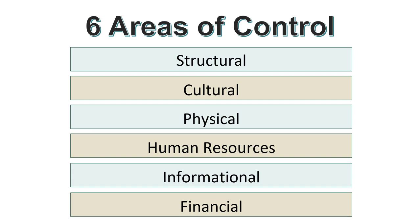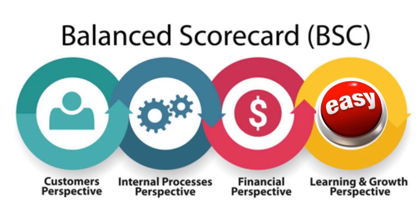We also have the cultural area — this is an informal method of control that influences work processes and the level of performance through a set of norms that develop from our organizational cultural values and beliefs. This is something you want to make sure to continually monitor; sometimes it slips through the cracks in organizations — don't let that happen in yours.